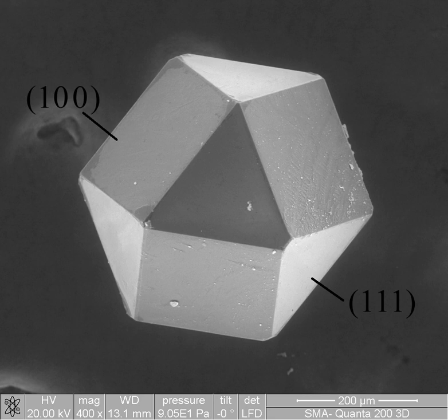The understanding of processing-structure-properties relationships is called the materials paradigm. This paradigm is used to advance understanding in a variety of research areas, including nanotechnology, biomaterials, and metallurgy.